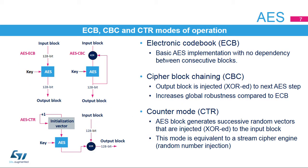As for DES operations, Electronic Codebook, or ECB, and Cipher Block Chaining, or CBC, are supported. ECB can be used safely for small messages only, a few blocks. In CBC mode, the output of the first operation is injected at the input of the next block operation, as described in the diagram. For the first round, an initialization vector is required.